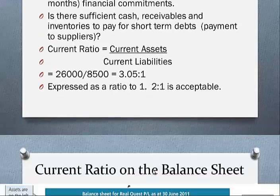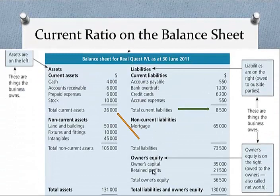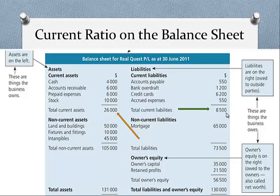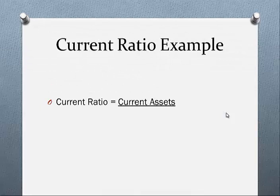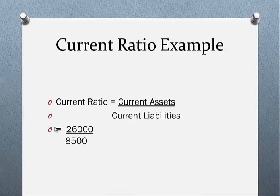Now let's turn to the balance sheet and see where we got these items from. Current assets total was 26,000; total current liabilities is 8,500. So we plug those into our formula — 26,000 over 8,500 — giving us that ratio which I explained before.